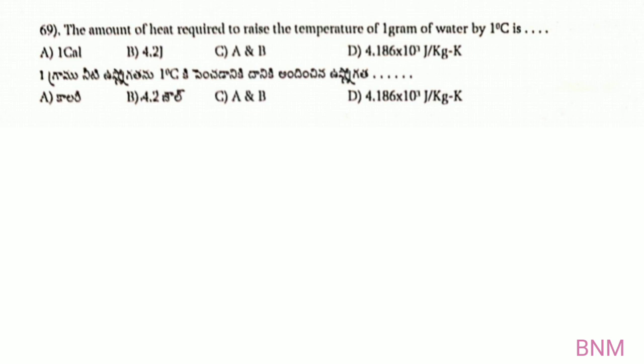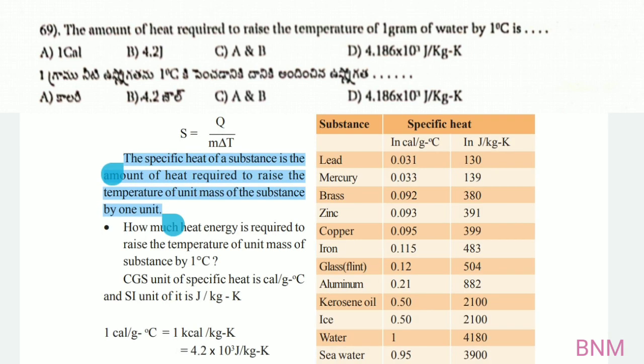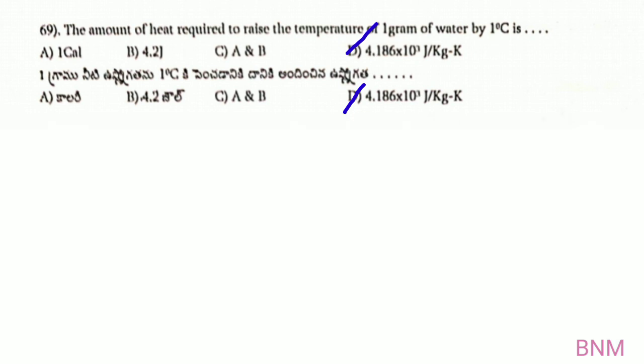The amount of heat required to raise the temperature of 1 gram of water by 1 degree Celsius. This is the definition of specific heat. The specific heat of water is 1 calorie per gram per degree Celsius, which is equal to 4.186 × 10³ J per kg·Kelvin. The fourth option, 4.186 × 10³ J per kg·Kelvin, is the right answer.